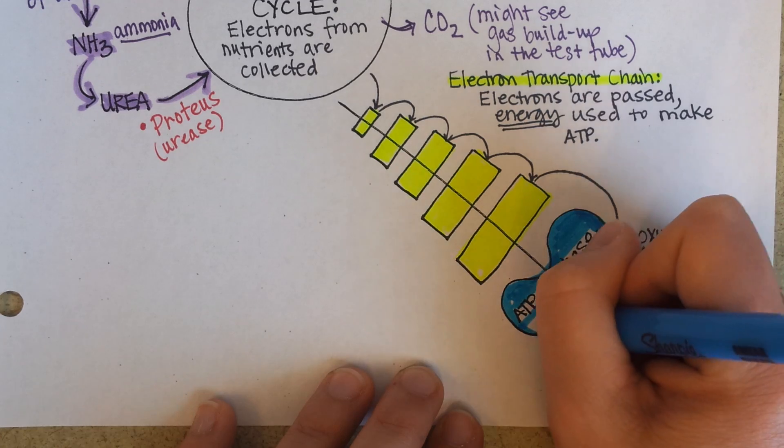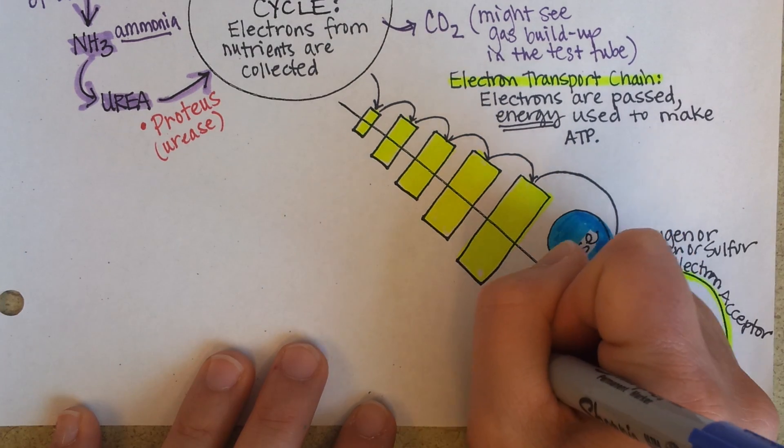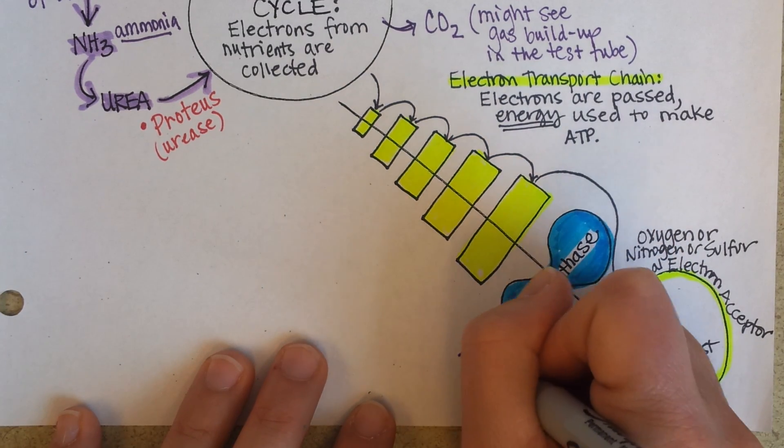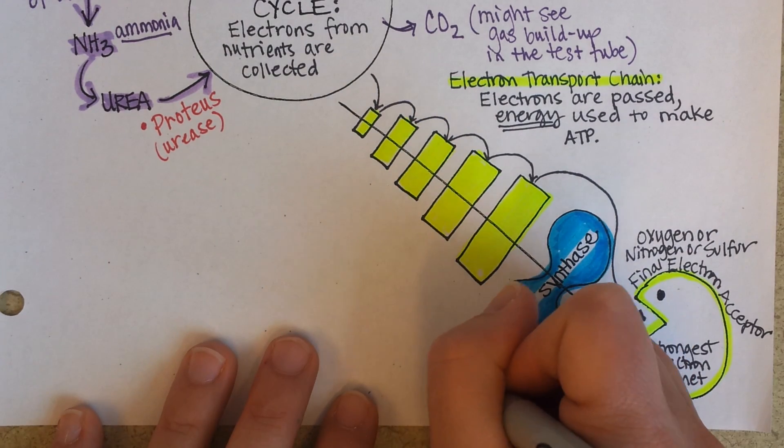ATP synthase starts churning out ATP as electrons flow by it. Lots and lots of ATP.